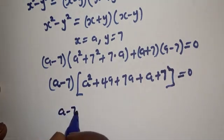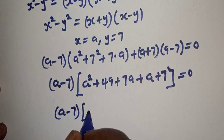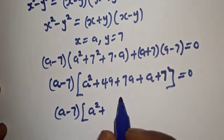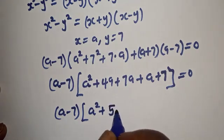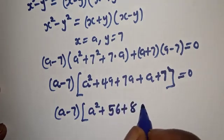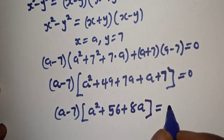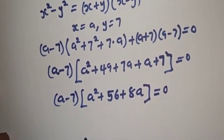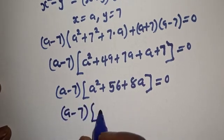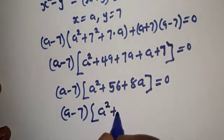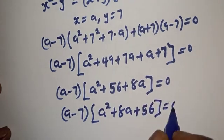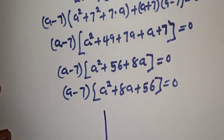...a squared plus 49 plus 7a plus a plus 7 is equal to zero. This gives us (a minus 7) multiplied by (a squared plus 49 plus 7a plus a plus 7) — combining like terms that is 56 plus 8a — equal to zero.